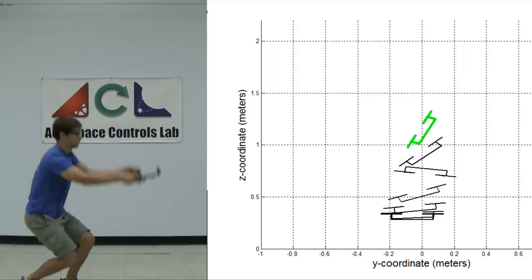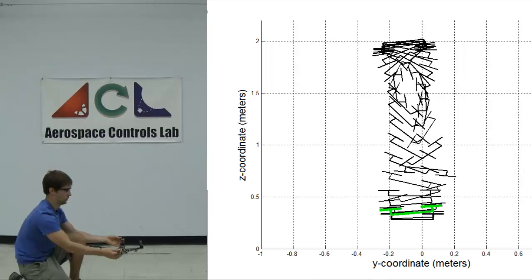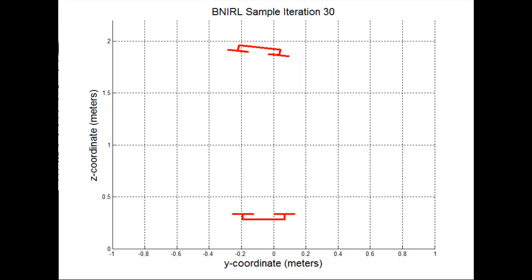For the final dataset, a single flip is demonstrated. In this case, the posterior converges to two subgoals, one at each end of the demonstration.